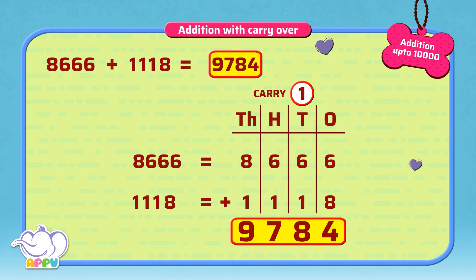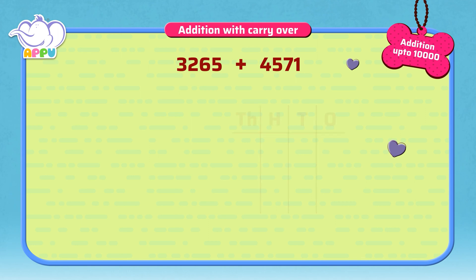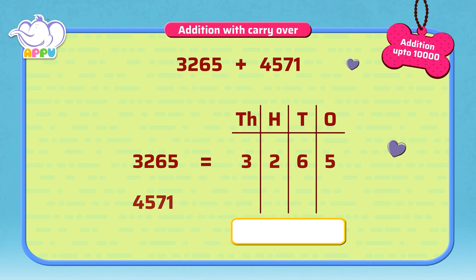Much better. 3,265 plus 4,571. We write it as thousands, hundreds, tens, and ones. We add the ones first.